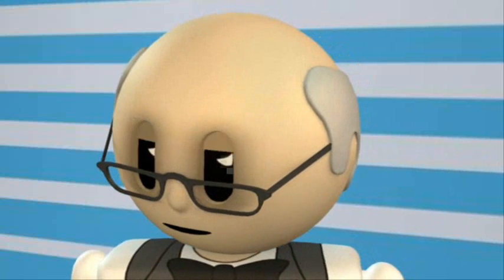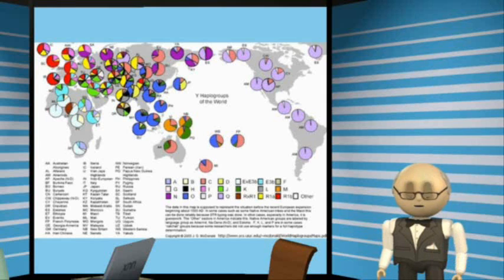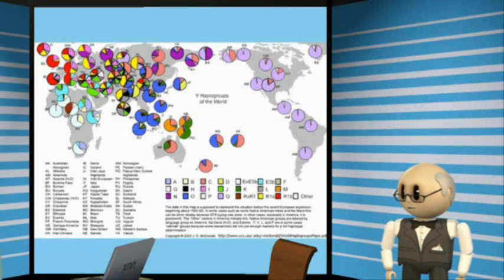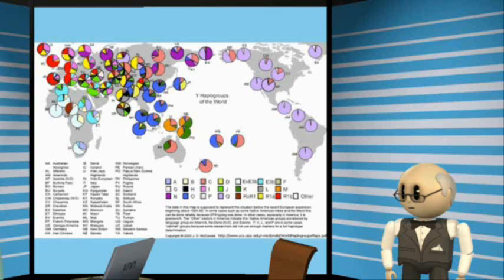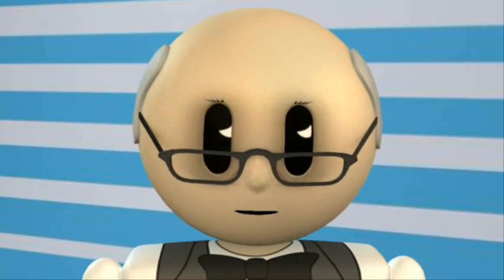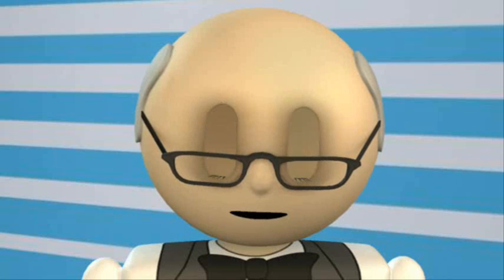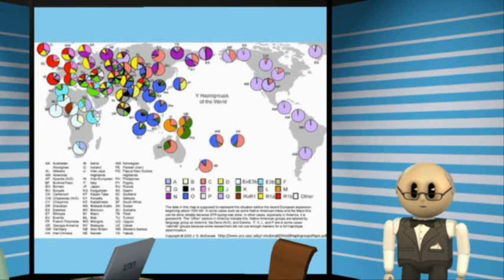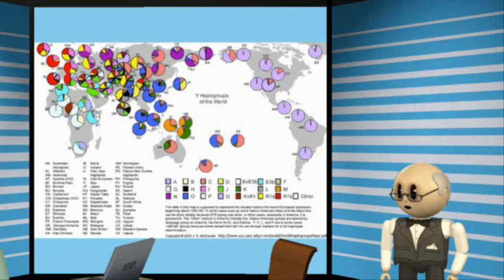Y-chromosome markers — Y haplogroups — were more recently discovered but are also well understood. Only males carry them. They descend through the paternal line, passing from father to son. It reminds you of the way surnames work in the Western world, and so Y haplogroups are often used by genealogists pursuing surname ancestry. The map shows prehistoric migrations of fathers, who over the past tens of thousands of years carried the different Y markers around the globe.